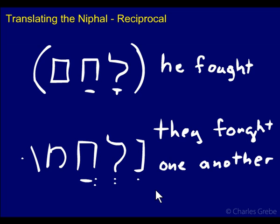So we have three basic ways to translate the Niphal: we have the passive of the Qal, which is the predominant way; we have the reflexive, which is where a subject acts on itself explicitly; and we have the reciprocal, which is where multiple subjects are acting on one another. There are nuances and slight variations on these three basic categories, and you can refer to your dictionary to see what those are.